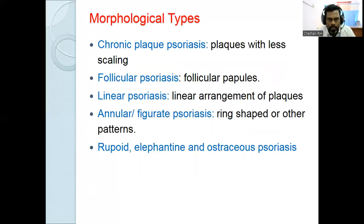Classification of psoriasis based on morphology: plaque psoriasis, guttate psoriasis, pustular psoriasis, unstable psoriasis, and erythrodermic psoriasis. Atypical types include ostraceous, rupioid, elephantine, digital, and interdigital psoriasis.